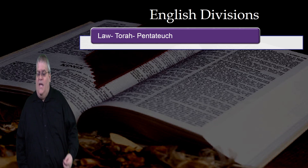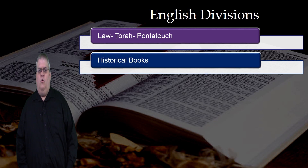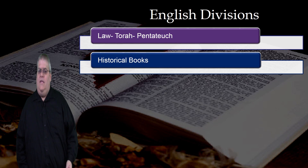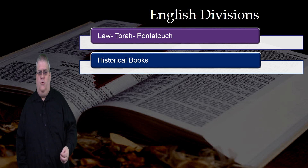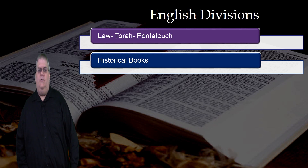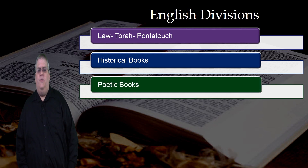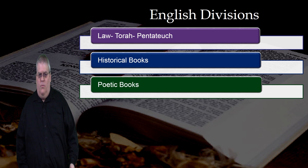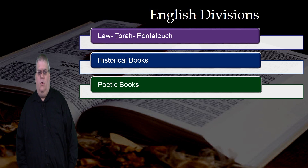Then the second division is the historical books. These books, like the name says, are primarily telling the history of Israel, continuing from where the Torah ended until the end of the Old Testament history. Then the third division is called the poetic books, which includes the Psalms — the Book of Praise — and then the wisdom books.